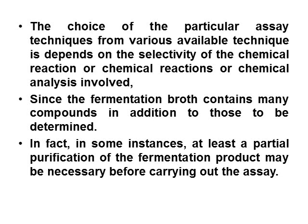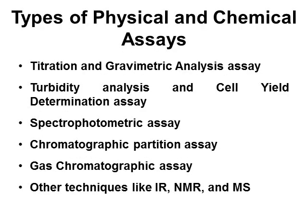Let us see the different types of physical and chemical assays: (1) Titration and gravimetric analysis assay; (2) Turbidity analysis and cell yield determination assay; (3) Spectrophotometric assay; (4) Chromatographic partition assay; (5) Gas chromatographic assay; (6) Other techniques like infrared spectroscopy, nuclear magnetic resonance, and mass spectroscopy.